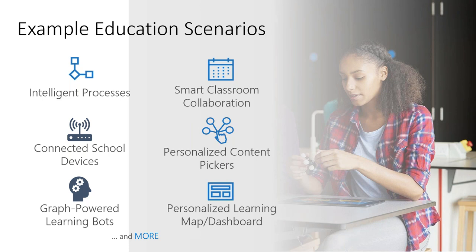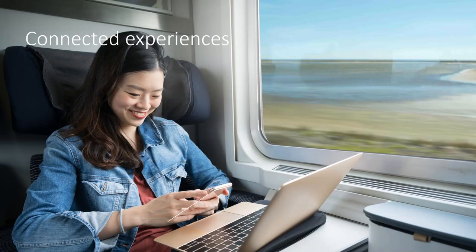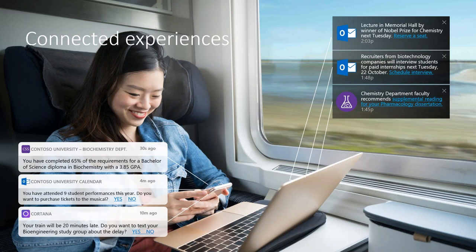Going back to connected experiences: this is a student who is a savvy digital consumer. The student expects a network of connected mobile experiences at universities — campus apps for finding roommates, getting transportation, booking meetings, purchasing meals, rating courses, and more. This is technology that exists today. There's a wide discussion on what that looks like.